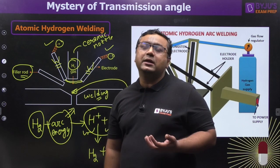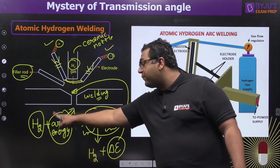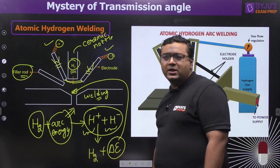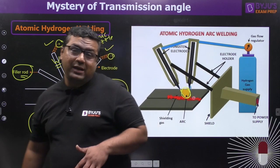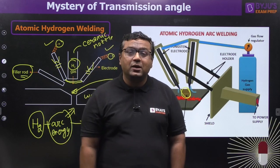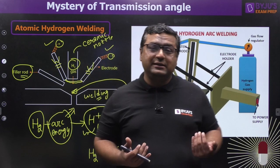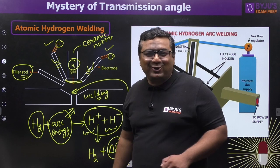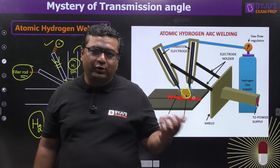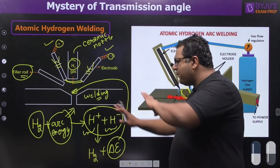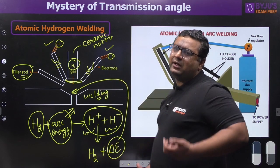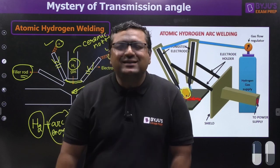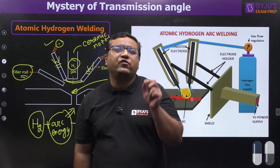Some students think: you provide 50 joules of energy to break hydrogen and get 60 joules back — but that would be magic! By the first law of thermodynamics, energy can neither be created nor destroyed. So you cannot get more energy out than you put in. The real benefit of using hydrogen in between is related to heat transfer, not energy creation.